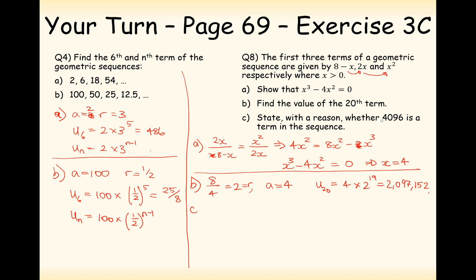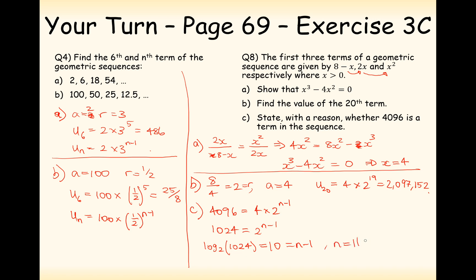Part c: state whether 4,096 is a term in the sequence. For it to be a term, 4,096 must equal 4 times 2 to the power of n minus 1. Dividing by 4 gives 1024 equals 2 to the power of n minus 1. Taking log base 2 of 1024 gives 10, so 10 equals n minus 1, meaning n is 11. Yes, 4096 is in our sequence — it's the 11th term.